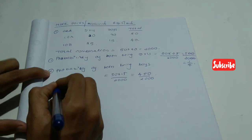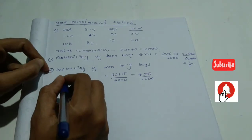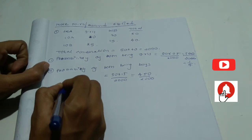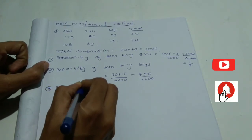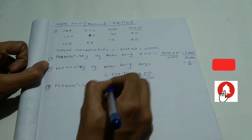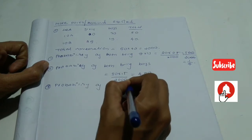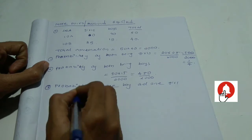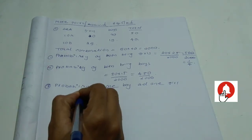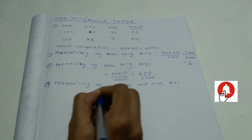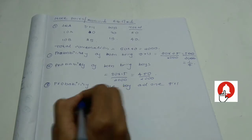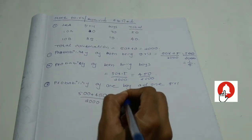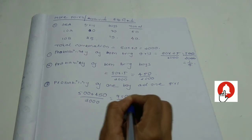The probability of one boy and one girl. That is 500 plus 450 divided by 2000. This is 950 divided by 2000.